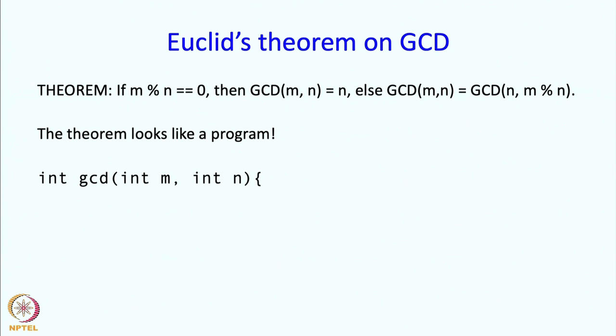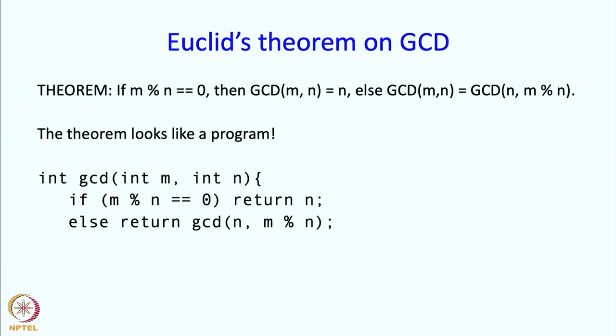So you might think, could we write it like that? In GCD(M,N), the computation is: if M mod N equals 0, then return N, because the theorem says the GCD is N. Otherwise we return the GCD of N and M mod N. That is it. This seems like a reflection of the theorem and a really compact program. The question is, will it work? It looks almost too good to be true.